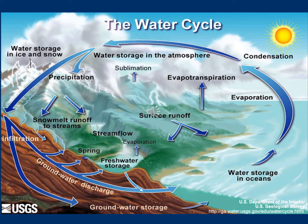Water can also infiltrate once precipitation hits the earth — into shallow groundwater that is still accessible to plants and animals and often surfaces in creeks and rivers. Deeper infiltration goes to long-term groundwater storage that can stay underground in aquifers for thousands of years.